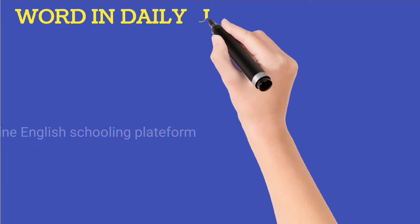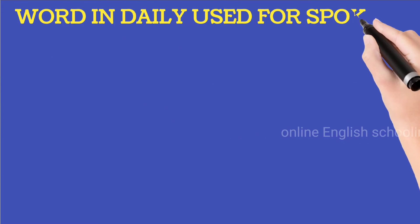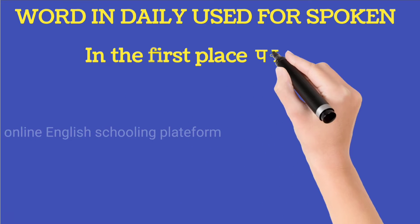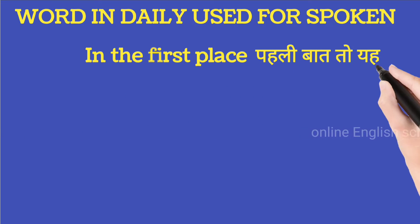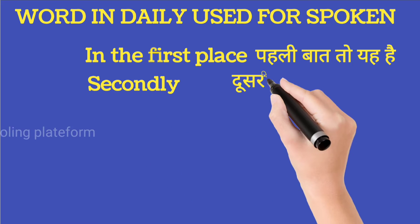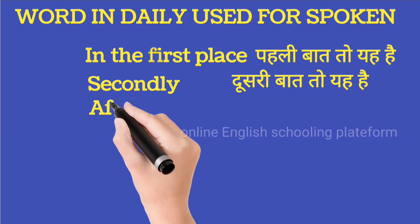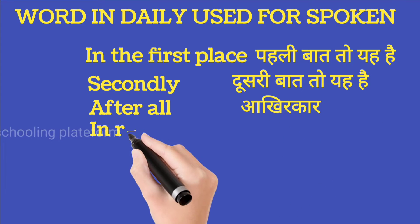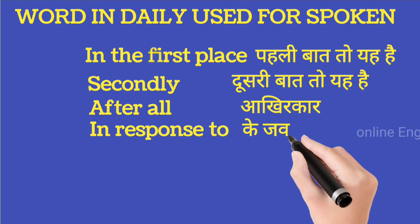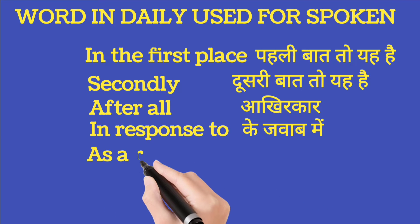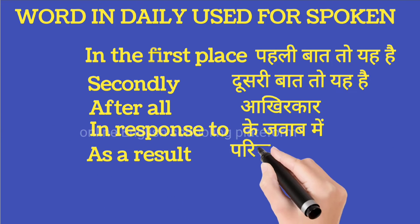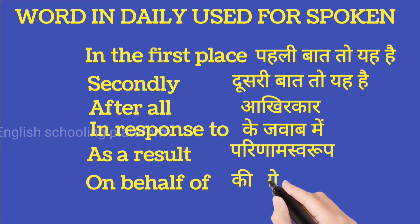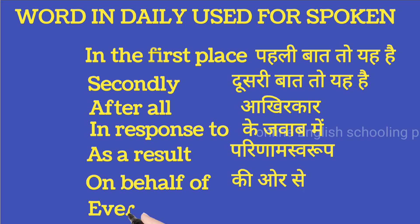Hello everyone, I am B Kumar from online English schooling platform. Today I will discuss daily use English sentences. First sentence: 'in the first place' — pahli baat to yeh hai. Next, 'secondly' — dusri baat to yeh hai. 'After all' — aakhir kar. 'In response to' — ke jawaab mein. 'As a result' — parinam swaroop. 'On behalf of' — ki or se.